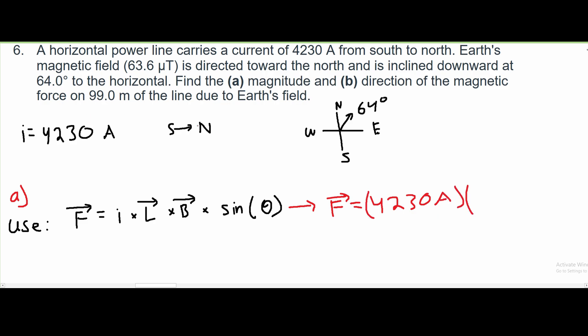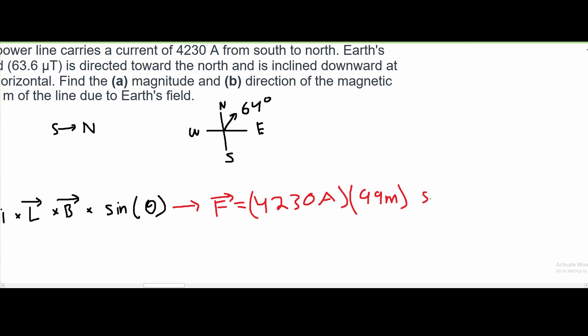We have our L, which we were given right here, 99 meters. And we could write that down with one of the values that we were given. So the length is 99 meters. And we plug that into our equation here. And we are multiplying this by sine of 64 degrees.